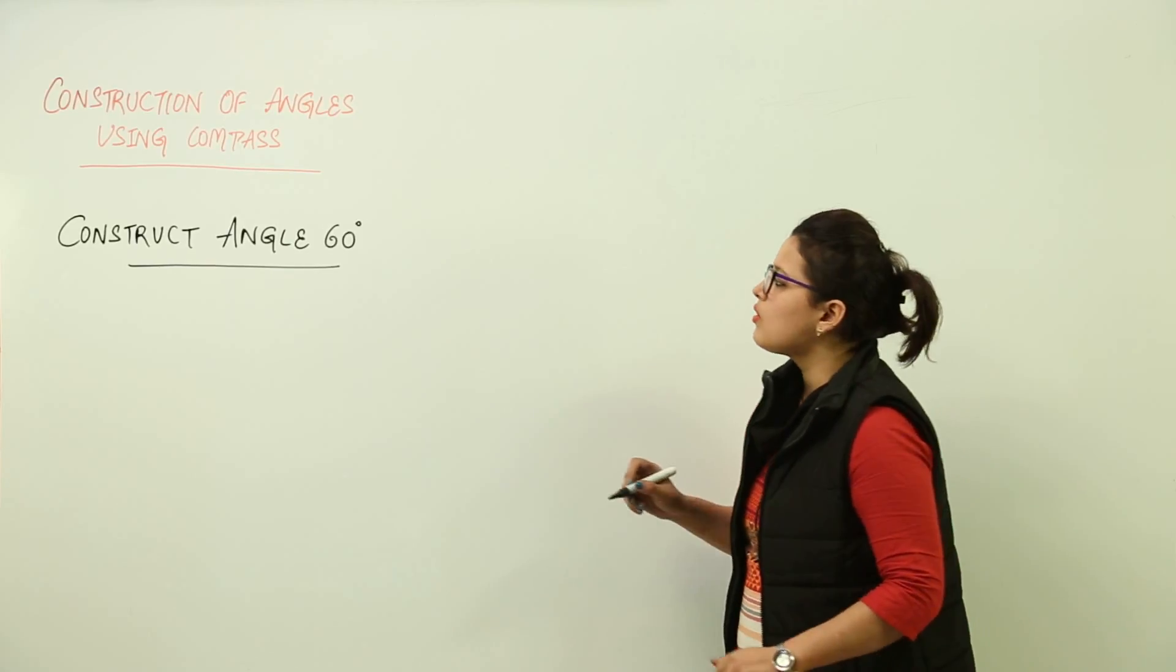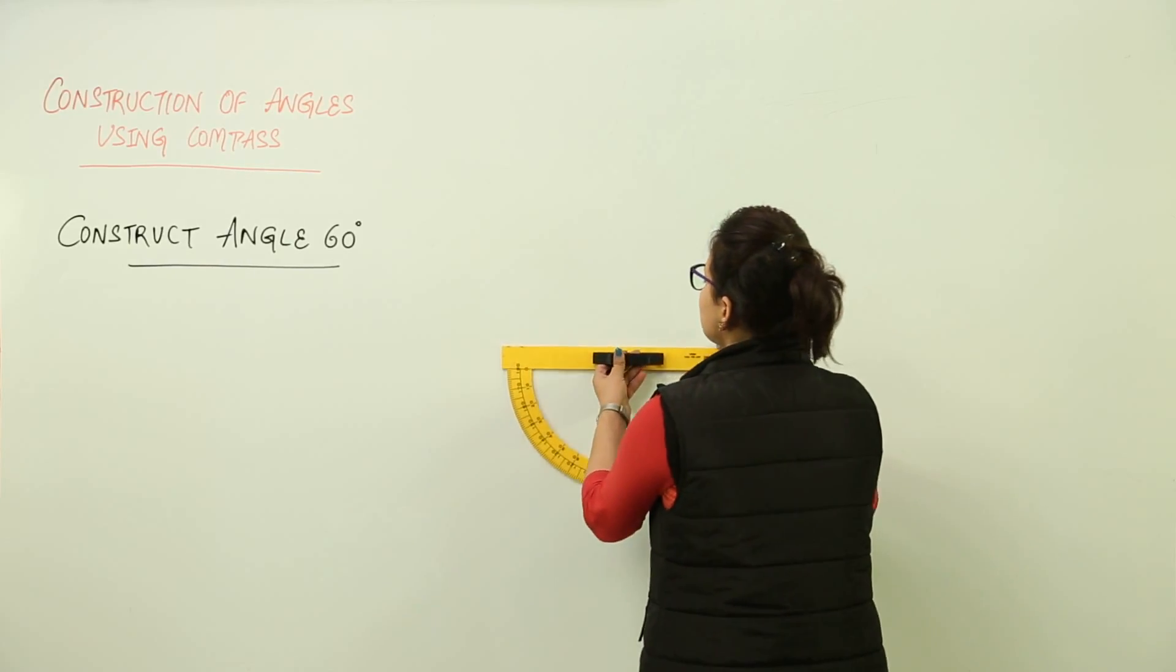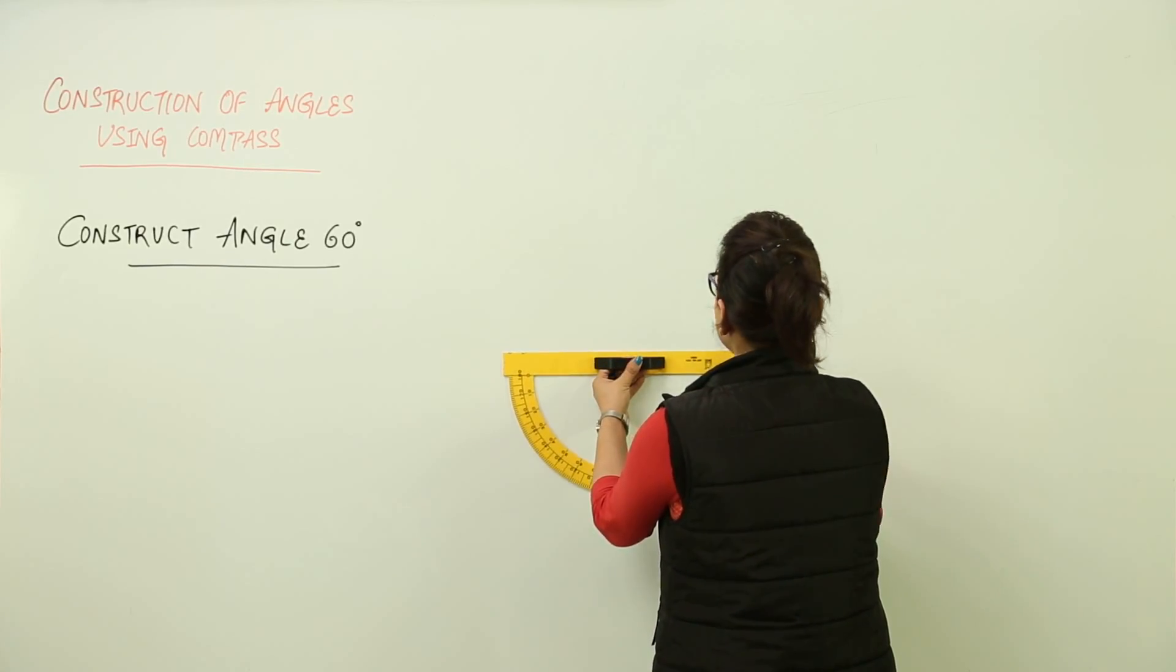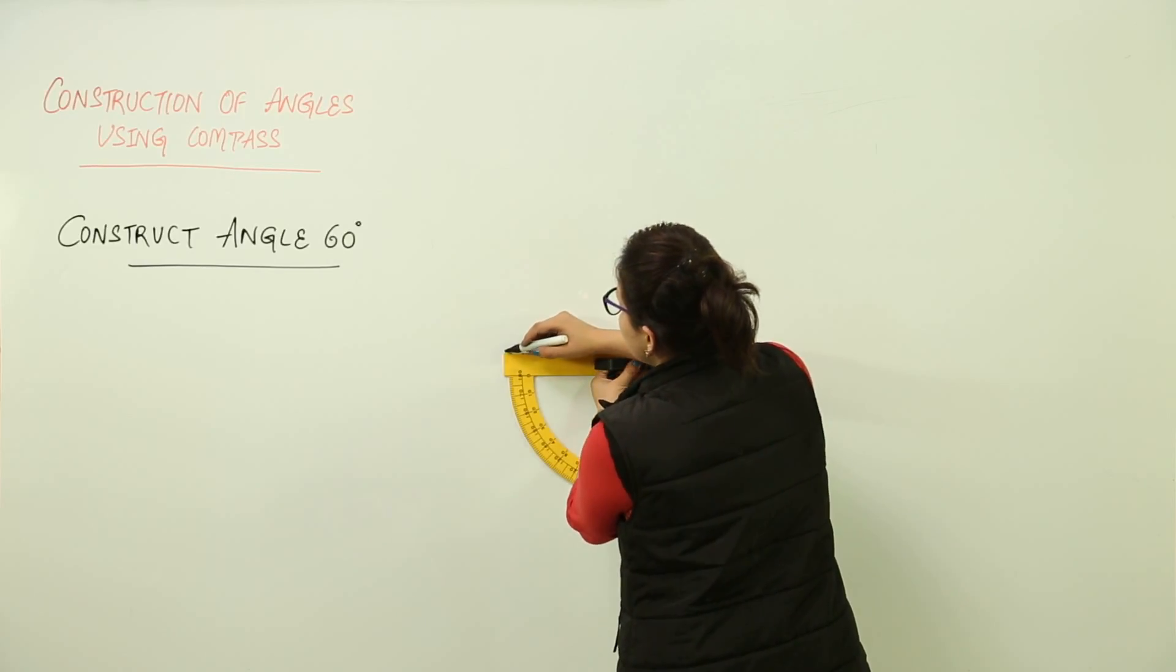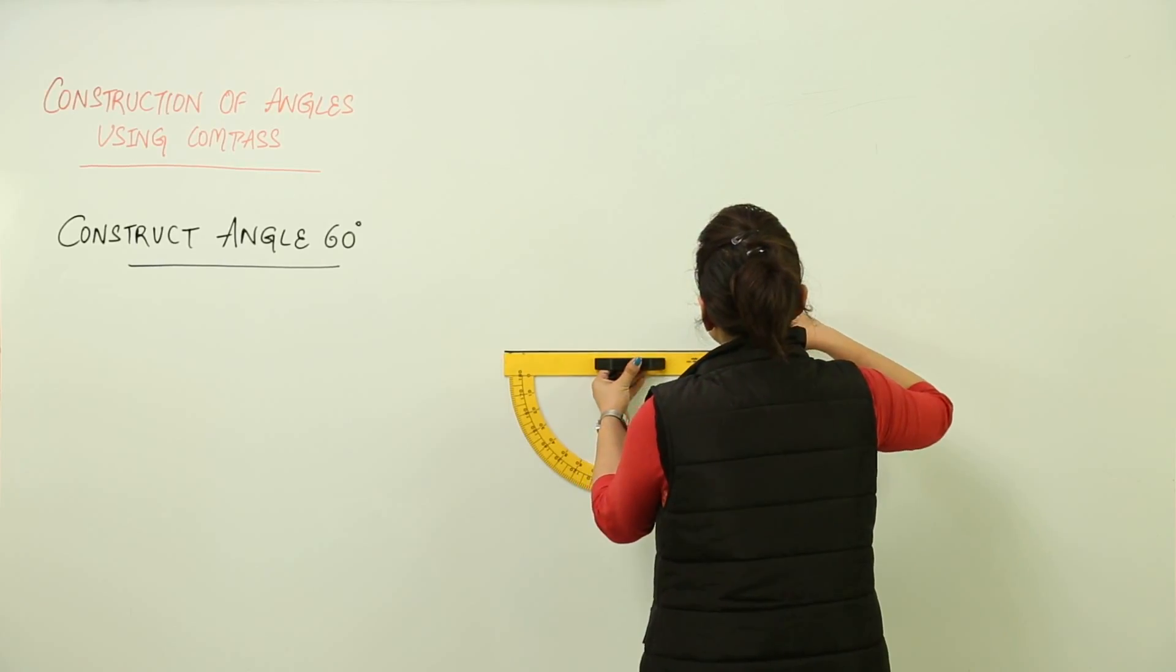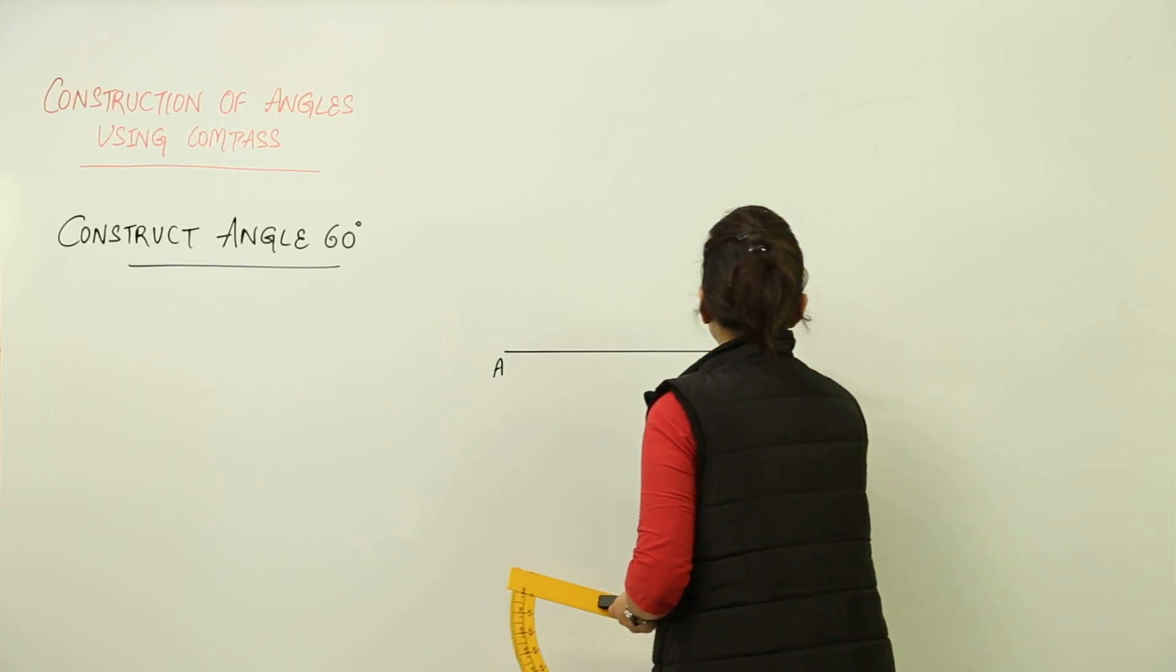For that, we are going to draw a straight line at first. And this is my straight line drawn. I will name it AB.